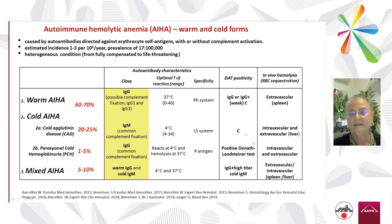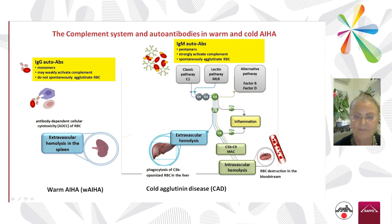There is also a very rare condition — paroxysmal cold hemoglobinuria — which is due to the Donath-Landsteiner biphasic hemolysin. And then we have mixed forms, where cold and warm antibodies co-exist.